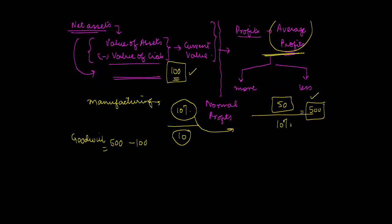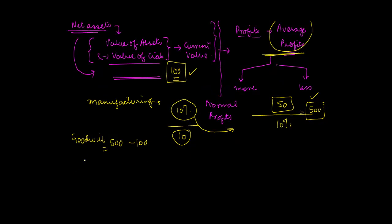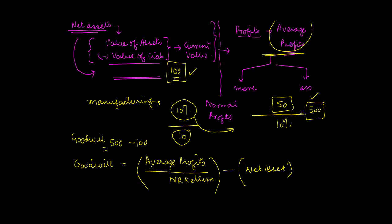Mathematically, the value of goodwill is calculated by capitalizing average profits. I take the average profits and divide them by the normal rate of return. Once I've got this capitalized value, I compare this with what actually is the asset employed in the business, and the difference between the two is actually goodwill.